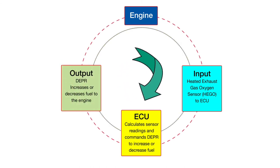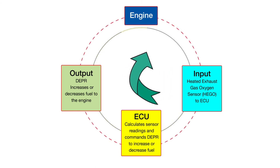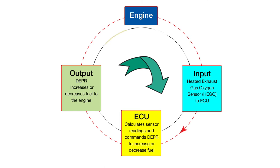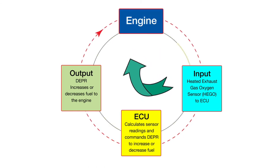The ECU calculates sensor input and gives command outputs to the direct electronic pressure regulator, or DEPR, to increase or decrease fuel pressure. We now have a closed loop input feed to the engine.